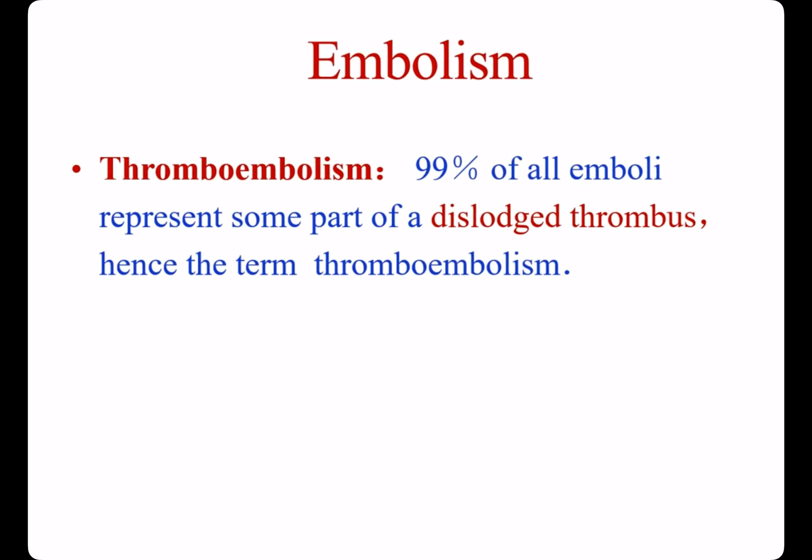Thromboembolism is one type of embolism. 99% of all emboli represent some part of a dislodged thrombus, hence the term thromboembolism — that is, a thrombus detached from the cardiovascular system and carried by blood to obstruct a blood vessel. So thrombus is the major source of embolism.